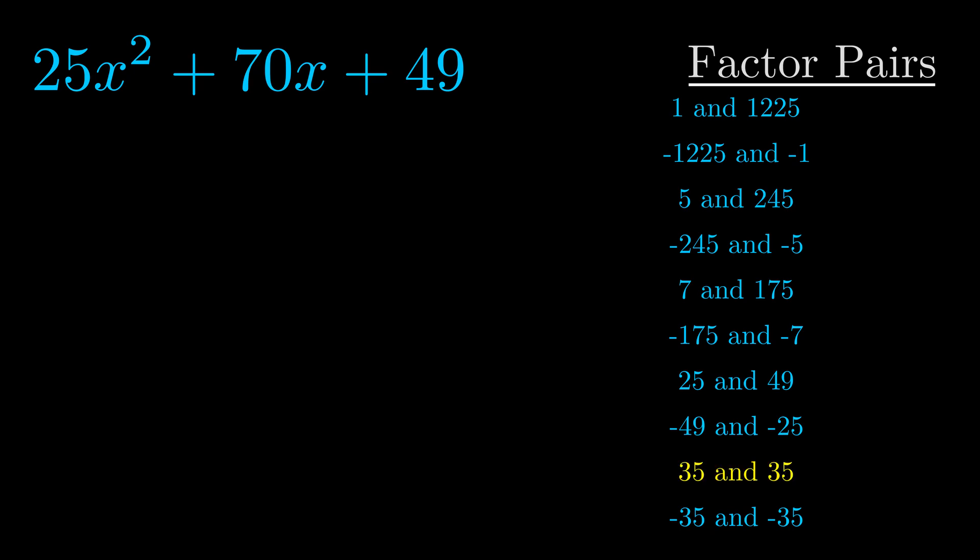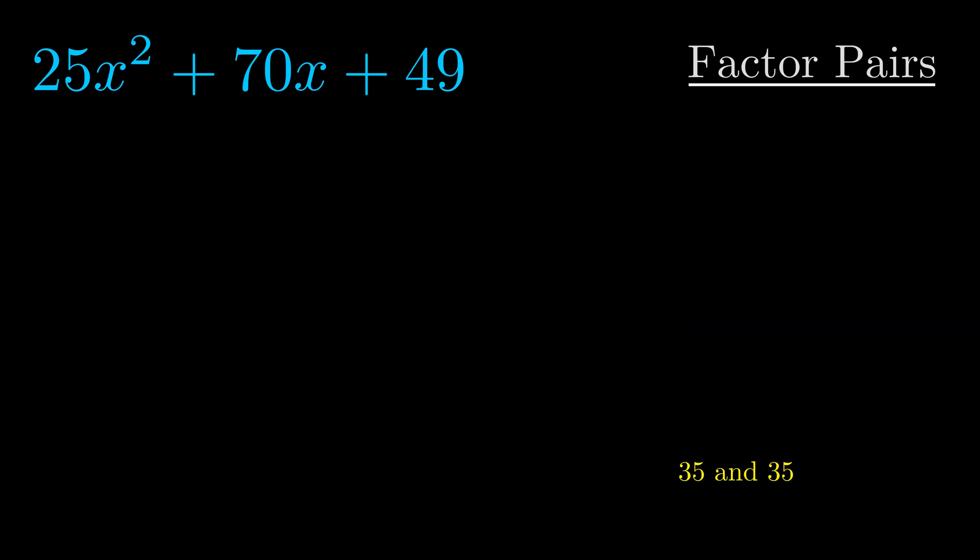And really this is the only factor pair that we need. Now once we have this factor pair, what we want to do is we want to use it to split up the b value.